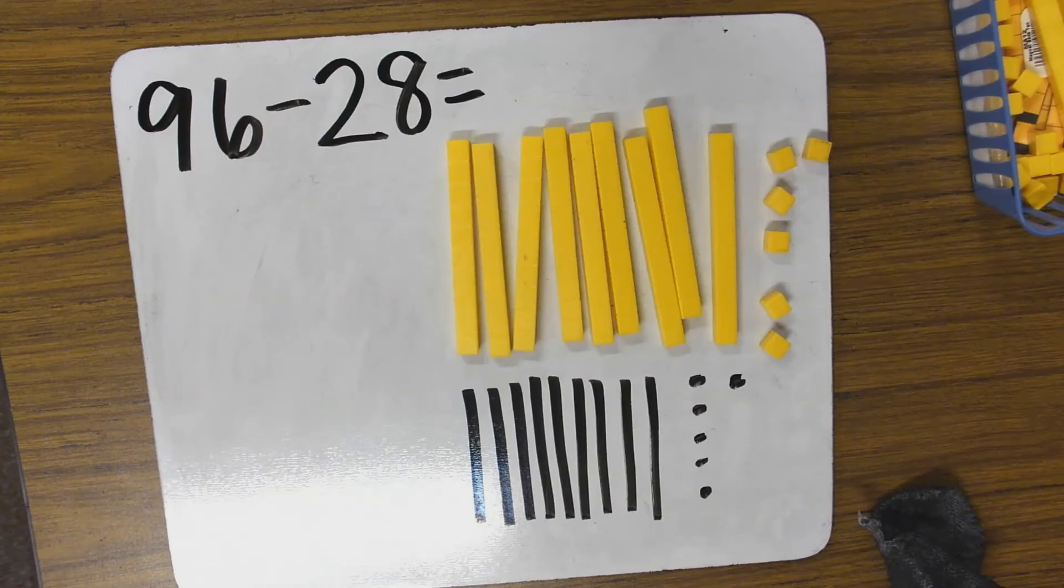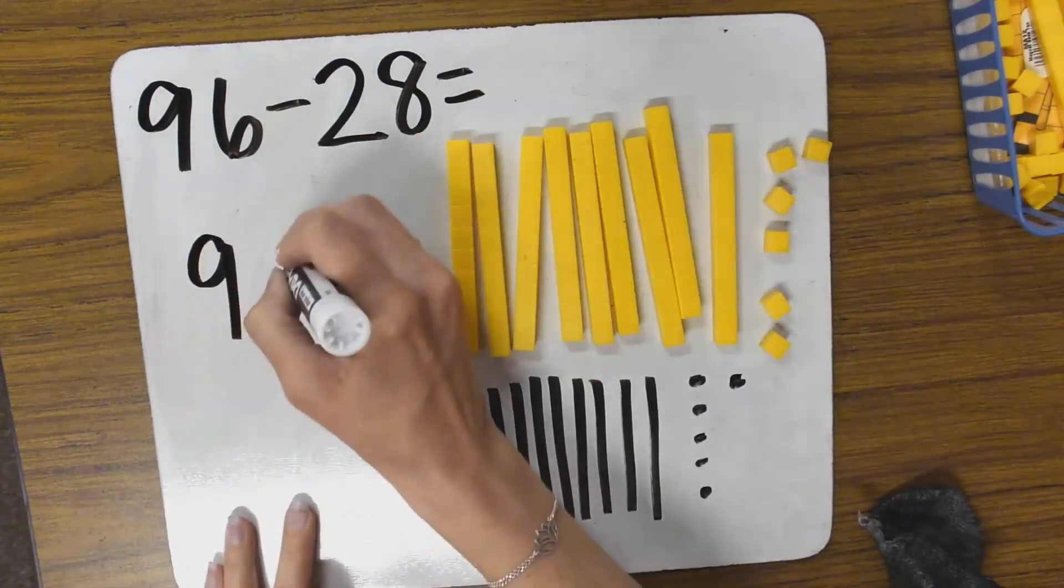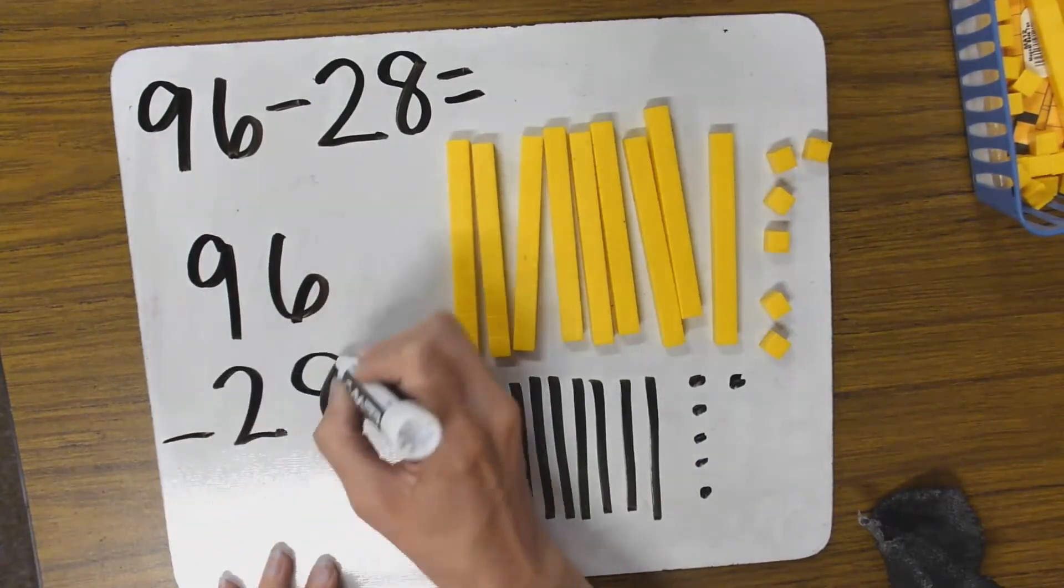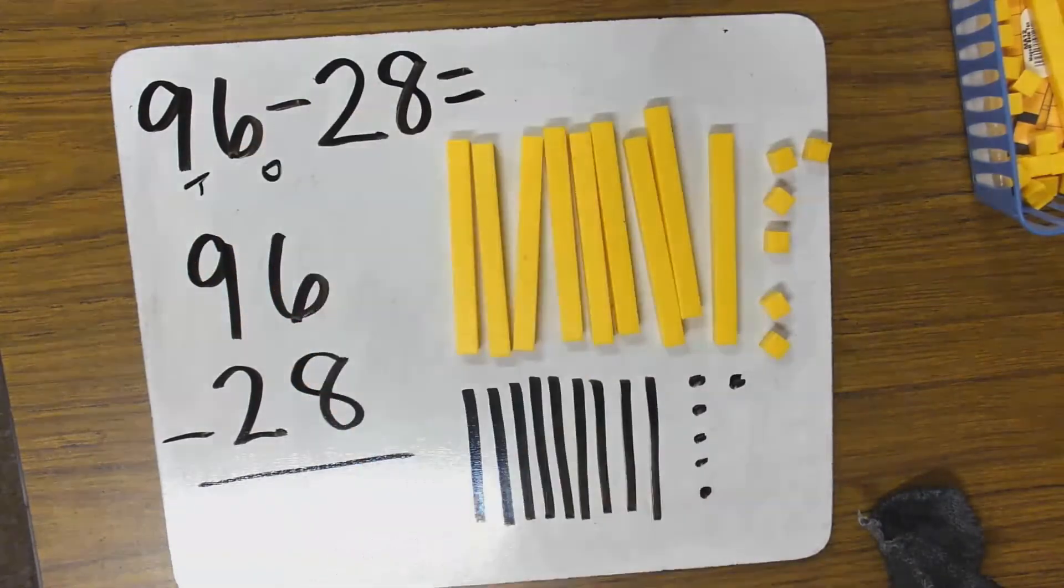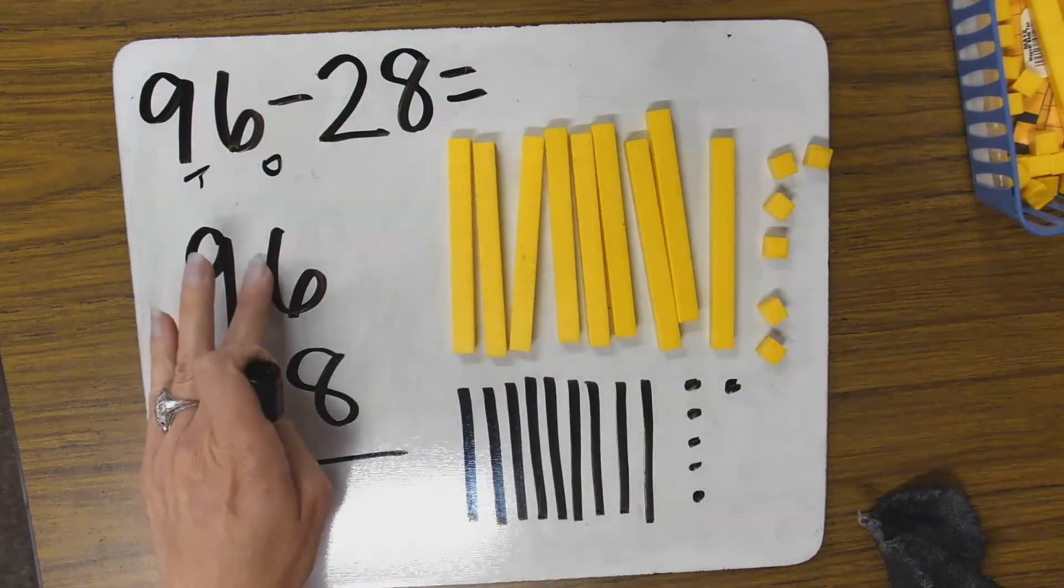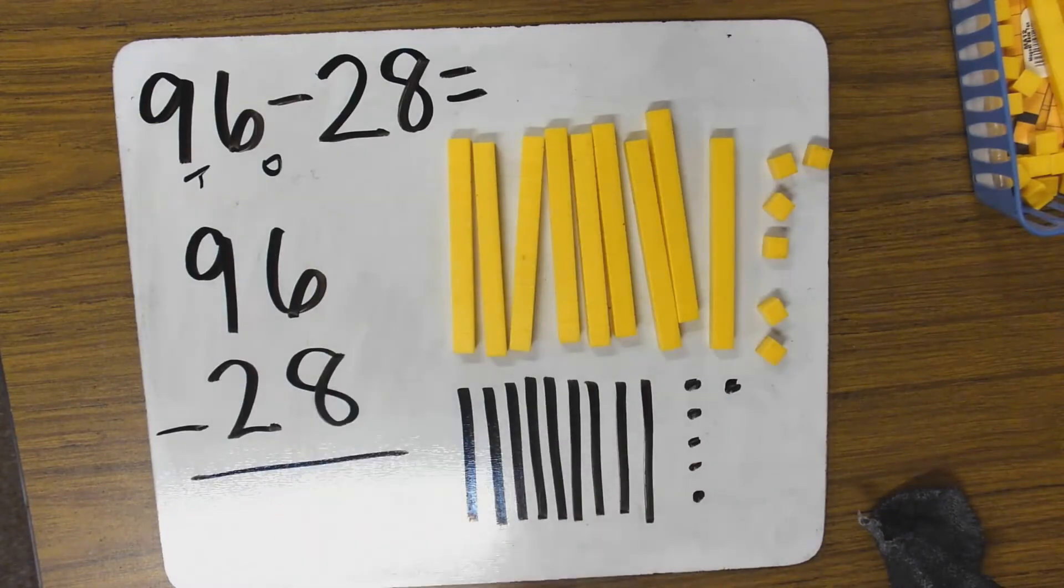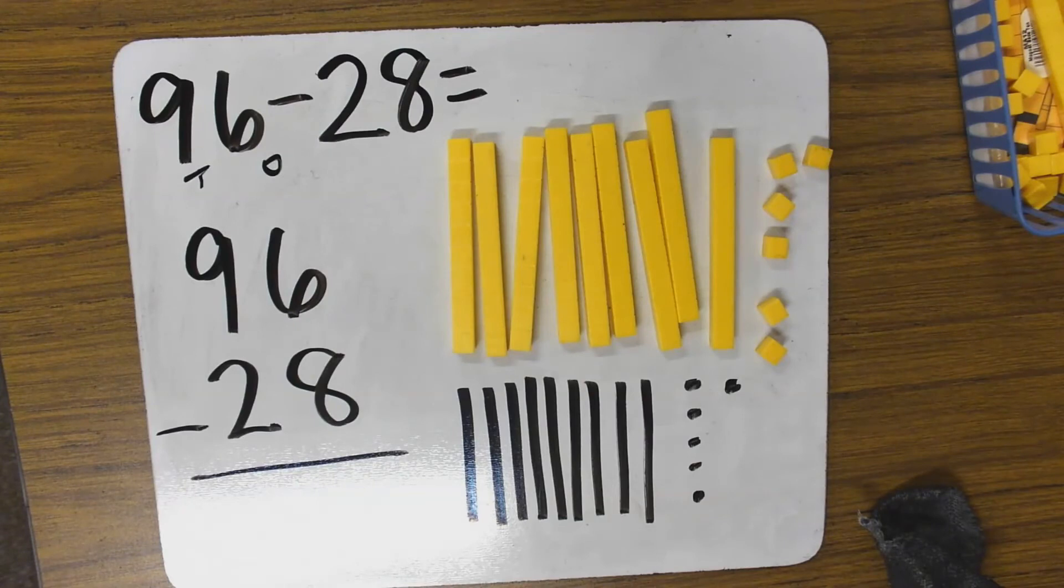Now let's try another, but this time we're taking away 10s and 1s. So I've set up my base 10 blocks in my picture. I'm going to set up my subtraction sentence vertically. So here again, I have my 10s and my 1s. Where am I going to start? Always with my 1s. So I have 6 1s. I need to take away 8 1s. Do I have enough? No way, Jose. I need to trade 10 for 10 1s. Go ahead and you trade 10 for 10 1s.